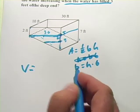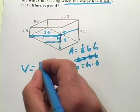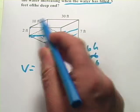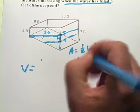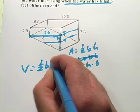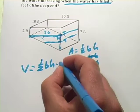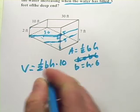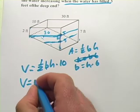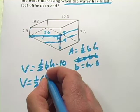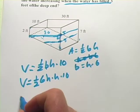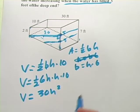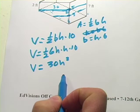So volume one half base times height times the width of this prism, which is 10 feet. So our volume is going to be one half base times height times 10. Okay. And we're going to substitute in for this B. We're going to substitute in six H so that we have this just in terms of H. So one half times six H times H times 10. If I simplify that, I get the volume equals 30 H squared. All right. Now we can take our derivative.